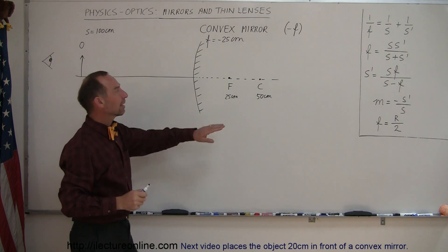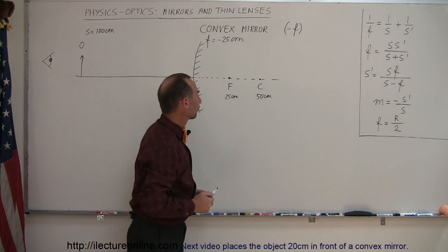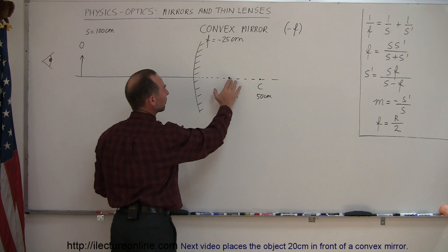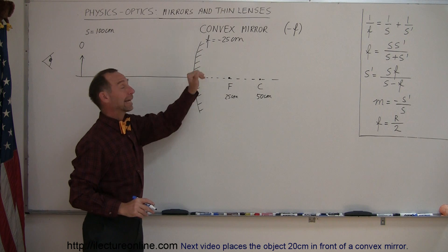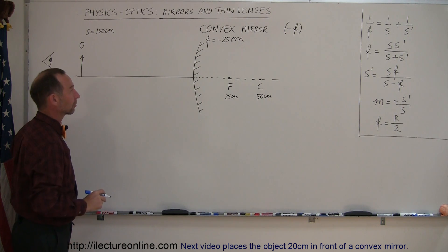Convex mirrors have negative focal lengths, so that means that the focal point is behind the mirror and so is the center of curvature. So always remember to put a negative in front of the focal length for convex mirrors.